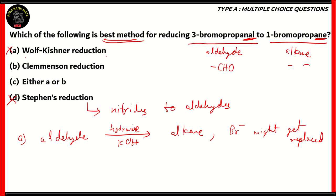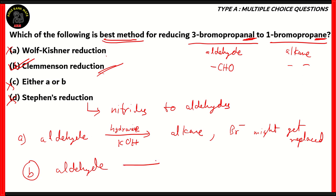Since Wolff-Kishner reduction is option A, option C — which says you can use either Wolff-Kishner or Clemmensen reduction — is also incorrect, because Wolff-Kishner cannot be used here. The only option that can be used is option B, the Clemmensen reduction. In option B, the aldehyde is mixed with zinc amalgam — a mixture of zinc and mercury — and concentrated HCl, and that converts the aldehyde into an alkane of the same order. Therefore, option B is the correct option.